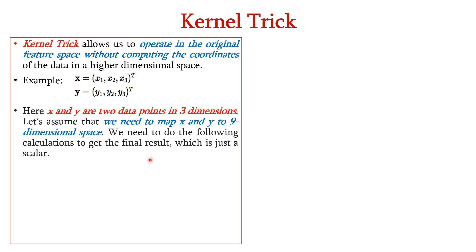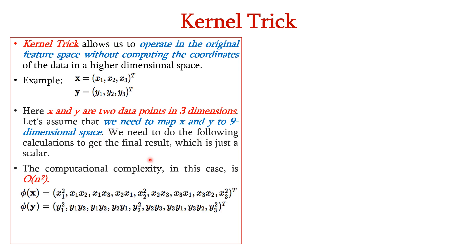Let us assume that we need to map x and y to nine dimensional space. We need to do the following calculations to get the final result which is just a scalar. The computational complexity in this case is O(n²). So, we can represent this x in nine dimensional space as φ(x) which is written as x1·x1 (x1²), and we can multiply x1 with x2 and with x3, and in terms of x2, we can write it as x2·x1, x2·x2 (x2²) and x2·x3, and in terms of x3, we can write it as x3·x1, x3·x2 and x3·x3 (x3²).